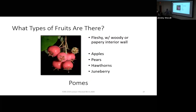Now our four fleshy fruits. The first is a pome — the best way to think of it is an apple. You have a fleshy fruit with a woody or papery interior wall. Hawthorns, pears, and Juneberry are also pomes and can be much smaller than an apple — about half an inch or smaller. So pomes don't have to be apple-sized.